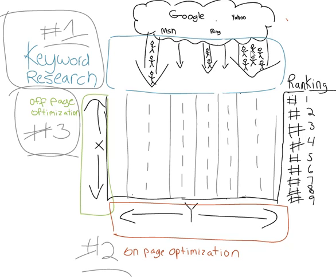Without knowing how many people in the keyword research phase are in that lane, you're just picking blindly. So by knowing in the keyword research phase which lane you want to target, you can easily then pick the lane that has the most people and the most conversions on the back end.